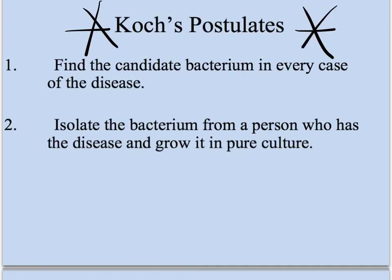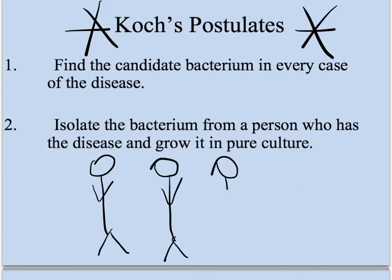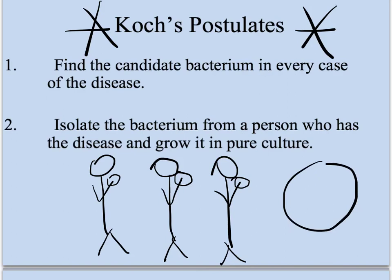Step number one: find the candidate bacterium in every case of the disease. So if these are my little people and they all have staph infections, in each one of those infections I should be able to find Staphylococcus aureus bacteria. Number two: isolate the bacteria you found in those infections and grow it on a plate — just like we grew our bacteria in class.